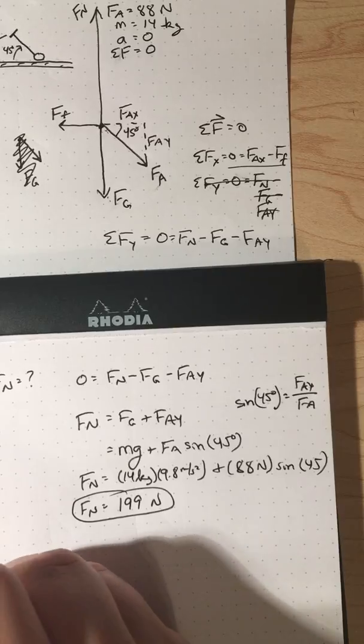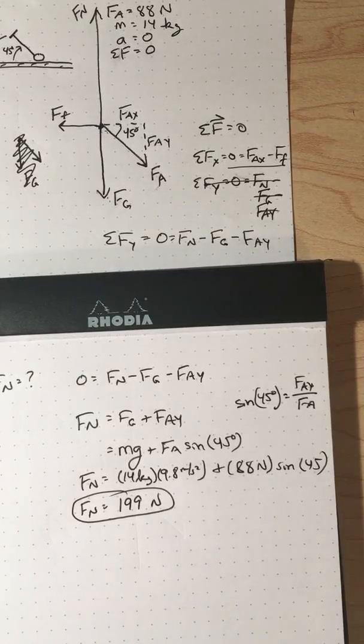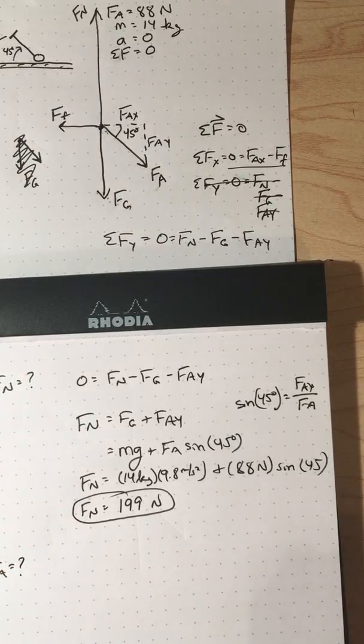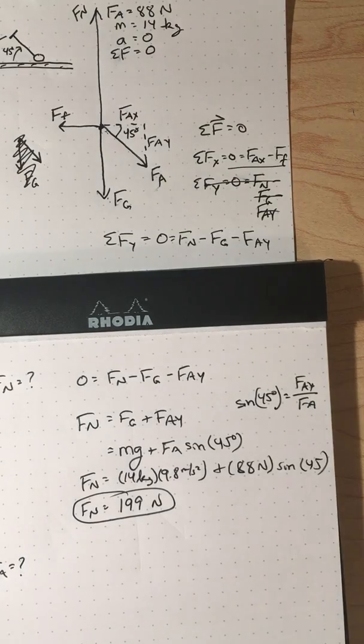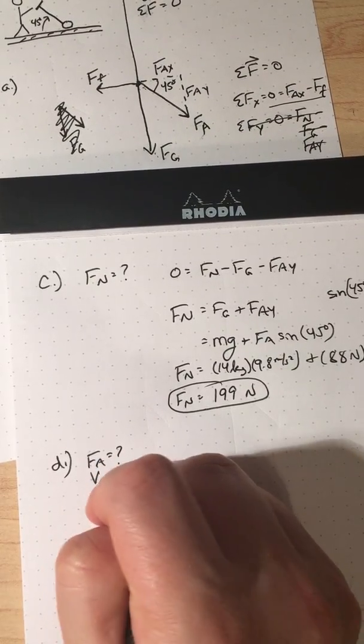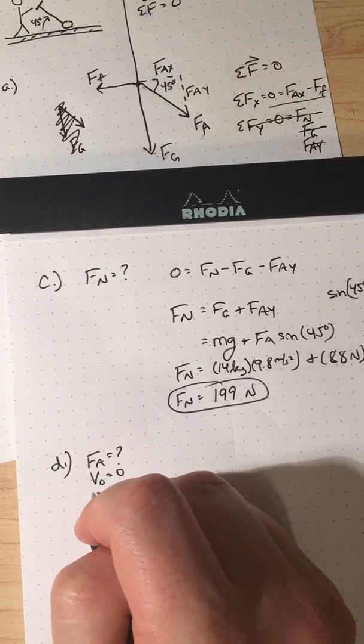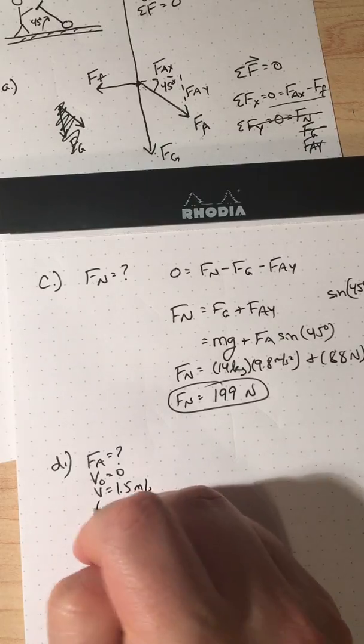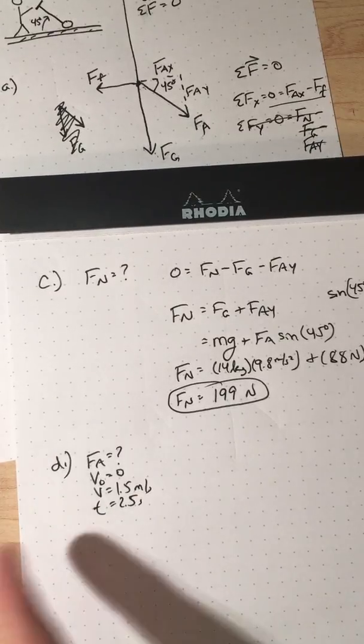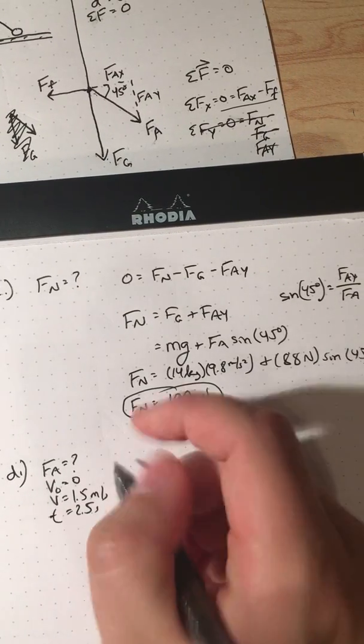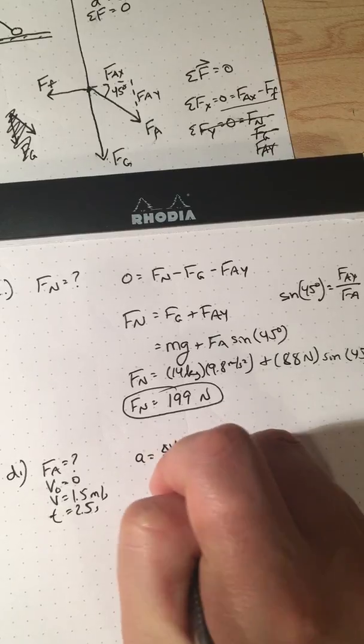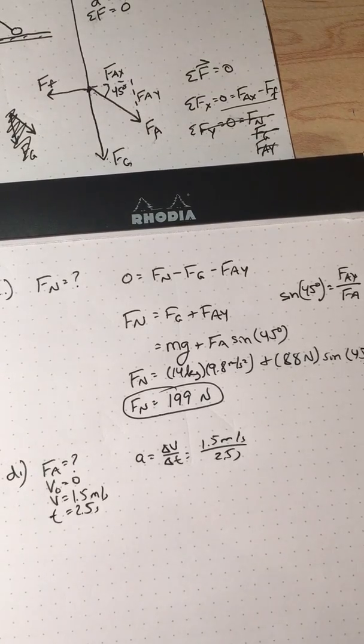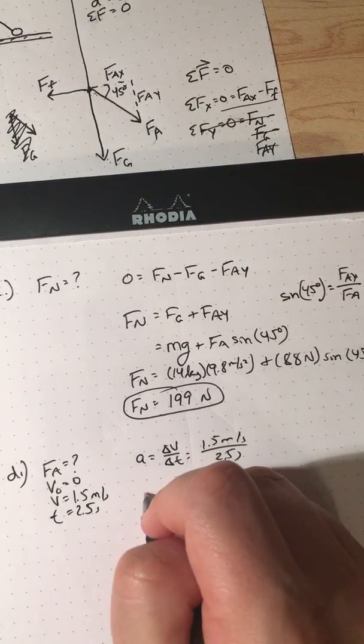And finally, part D says, what force must I exert on the lawnmower to accelerate it from rest, so rest means V-naught equals zero to 1.5 meters per second in a time of 2.5 seconds. Well, why is it giving me all this? Probably because it wants me to find an acceleration. So we know acceleration is delta V over delta T. So that would be 1.5 meters per second over 2.5 seconds. So 0.6 meters per second squared.